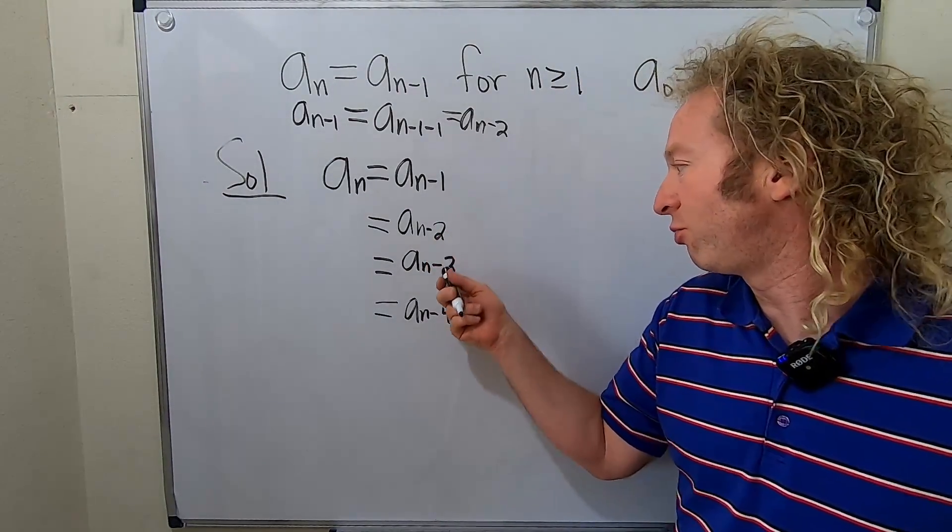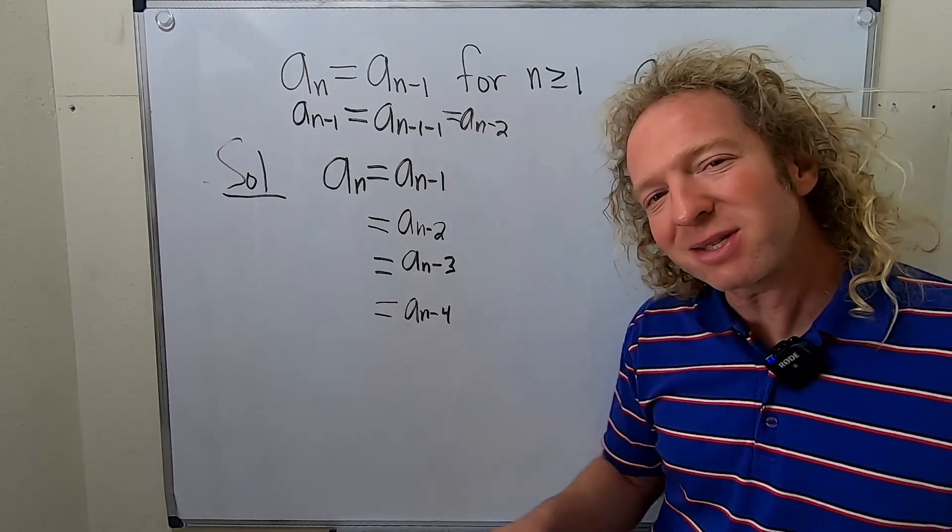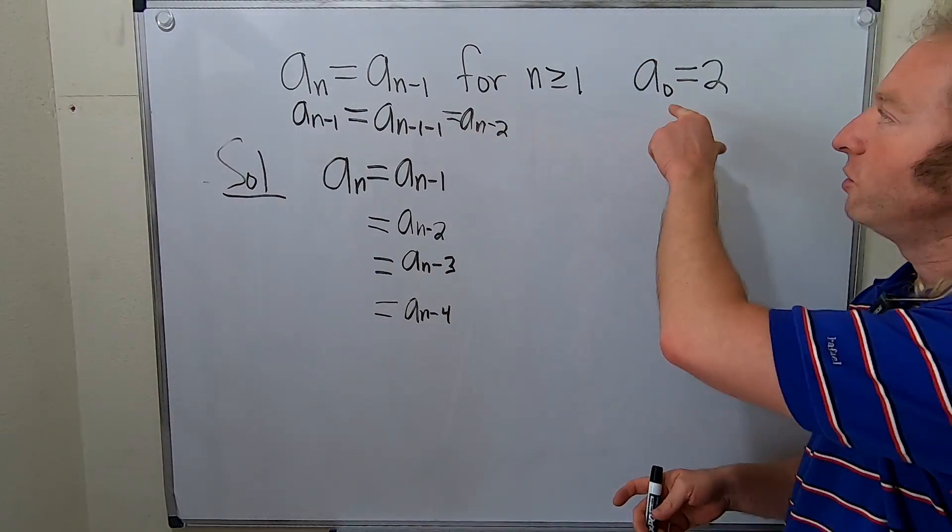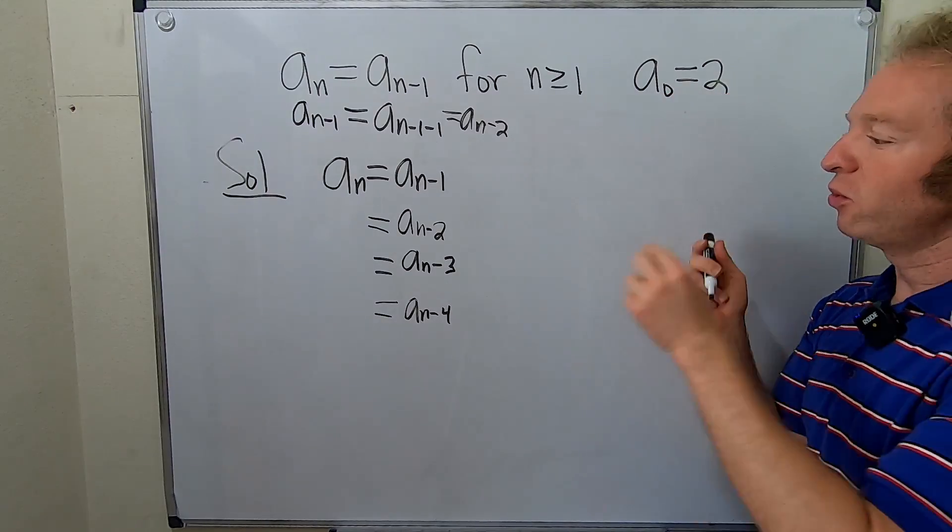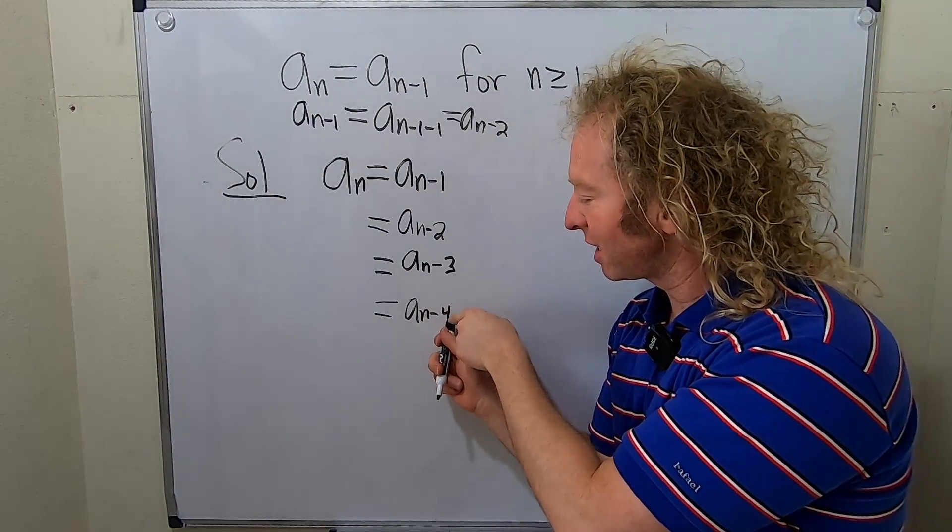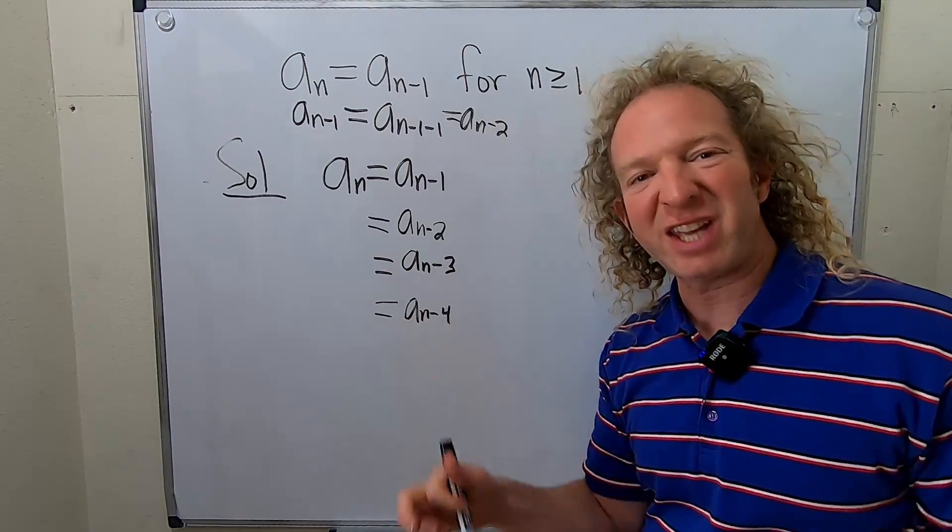It looks like the pattern is just one, two, three, four. But that still doesn't tell us when to stop. If you look at your initial condition, a sub zero equals two, you want this to be zero. So that's going to happen when this four is actually an n.